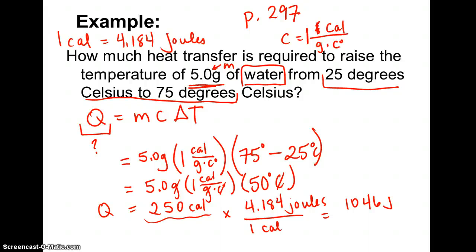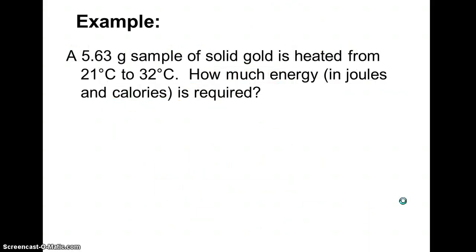For the next question, we're going to not necessarily look for the Q value, but look for something else. Again, I've placed my Q equals mcΔT equation on there. In this case, I have 2.8 grams sample of solid gold, and it's heated from 21 to 36 degrees Celsius, how much energy is required? This one actually looks like I am looking for the Q value. Same thing. In this case, I have here my mass, that's my m value. This is my substance, I have gold.